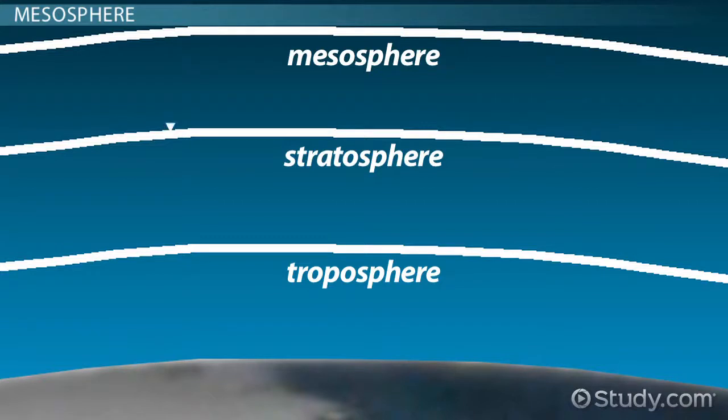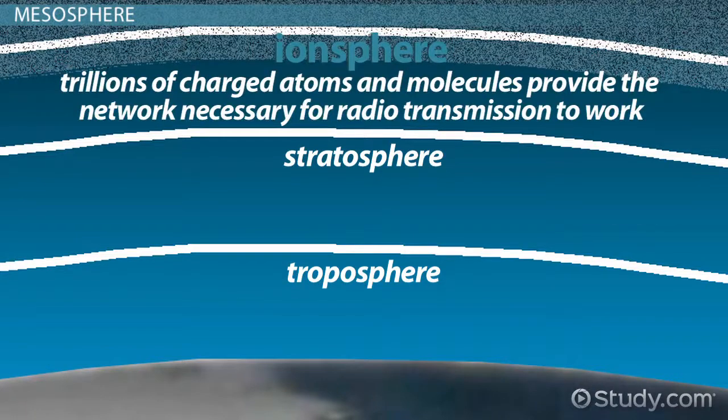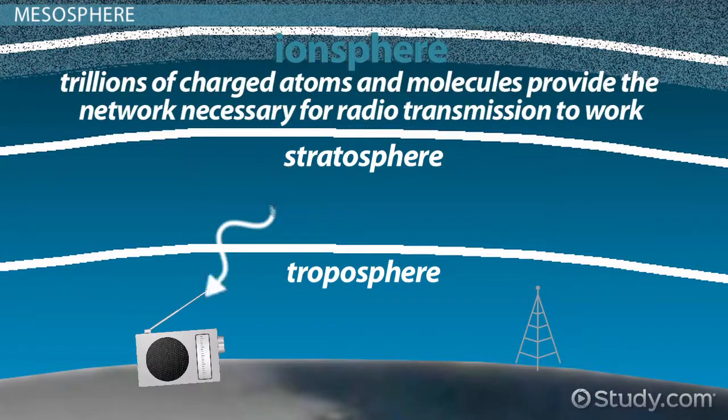In any event, it stretches from the top of the stratosphere, or around 55 kilometers above the Earth, for another 30 or 40 kilometers. This is also the start of the ionosphere, where trillions of charged atoms and molecules provide the network necessary for radio transmission to work.